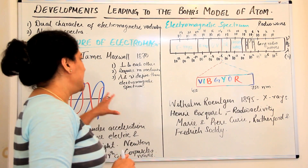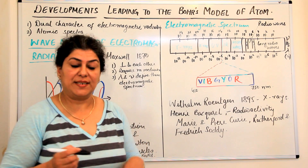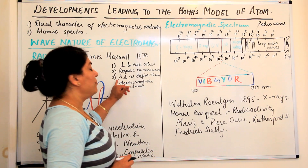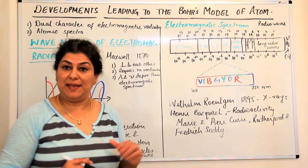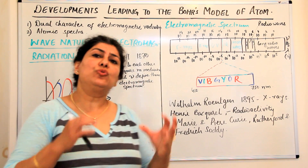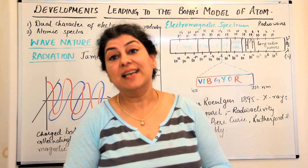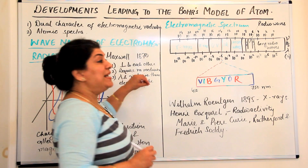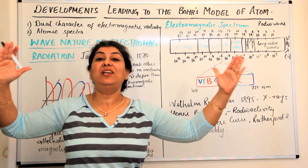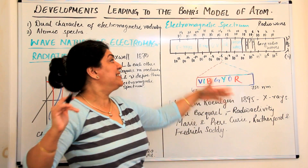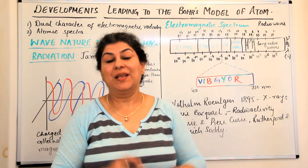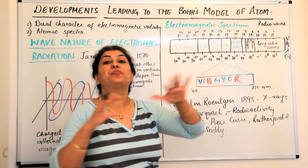Electromagnetic radiations can be defined in terms of a few measurements, mainly wavelength and frequency — there is wave number too, but wavelength and frequency are used to define electromagnetic radiation. Based on this, there is an entire range of frequencies and wavelengths possible for electromagnetic radiations, and this is known as the electromagnetic spectrum.